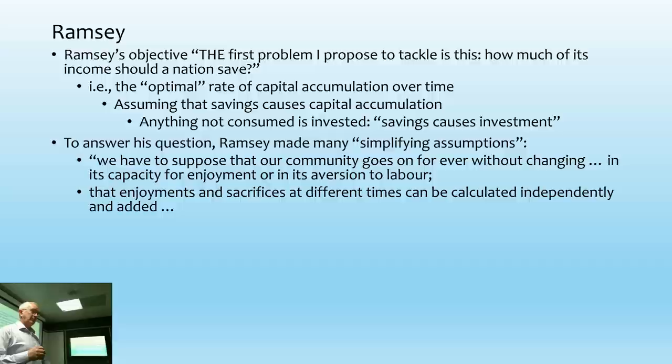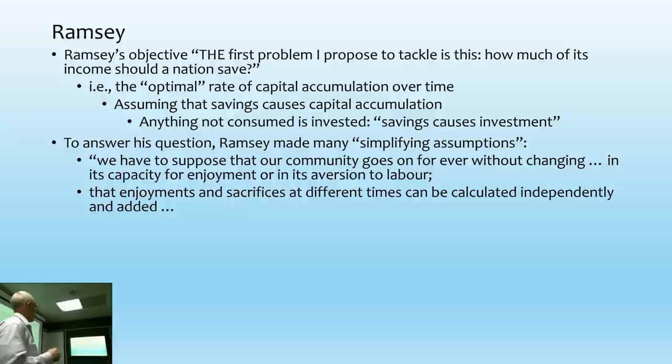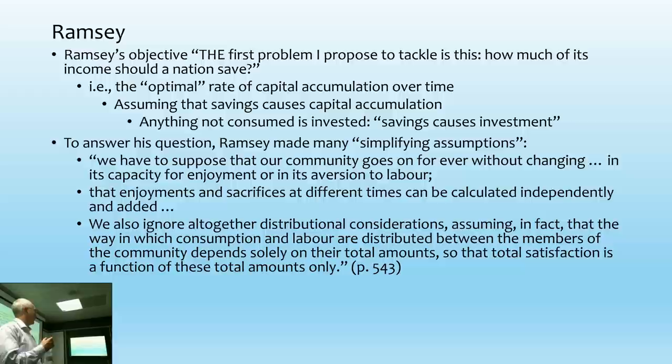And then this classic: 'We ignore all distributional considerations, assuming that the way in which consumption and labour are distributed depends solely on the total amount.' In other words, no class conflict — there are no capitalists, no workers; everybody is simultaneously Bill Gates and doing coolie labour at once. What these assumptions mean is that you can use a single utility function. Now you can't criticise Ramsey for making that assumption, because he did it before the first paper that revealed this problem — which was Gorman's paper in 1953.